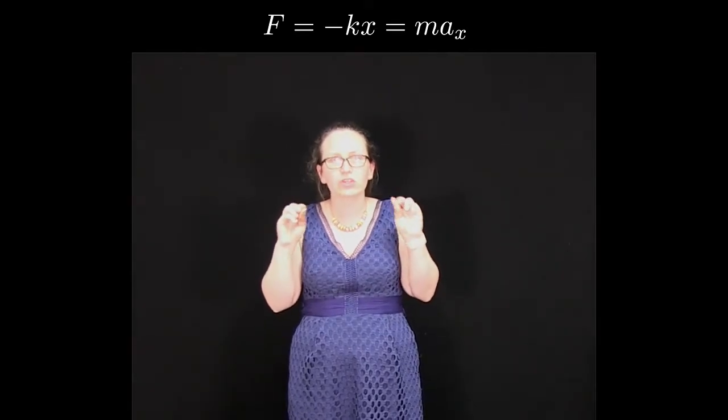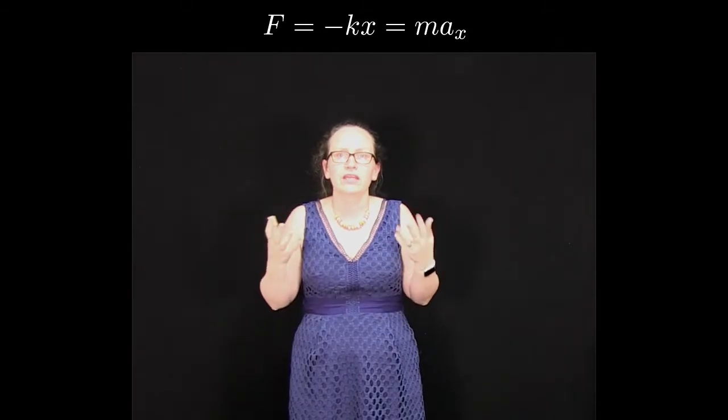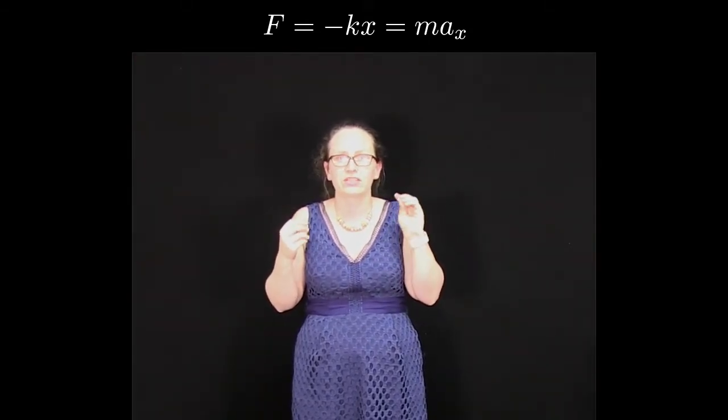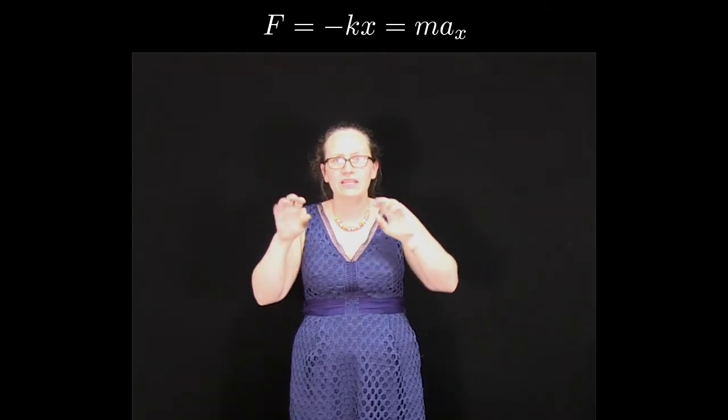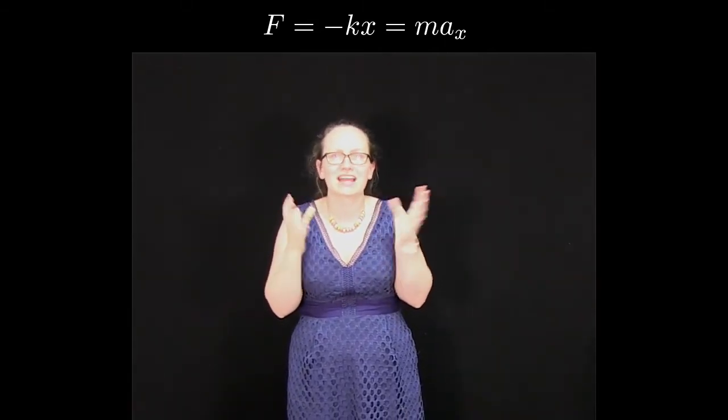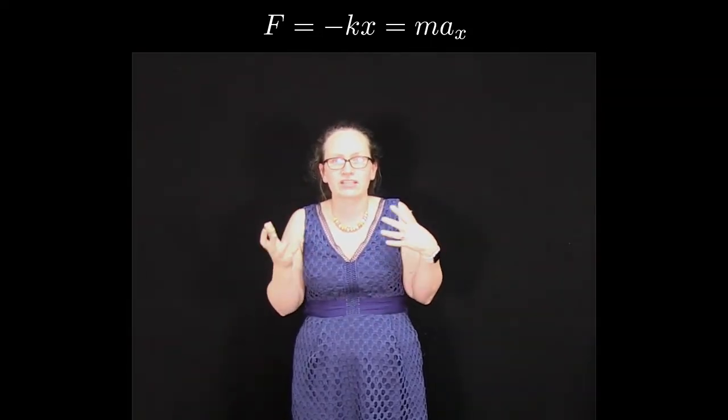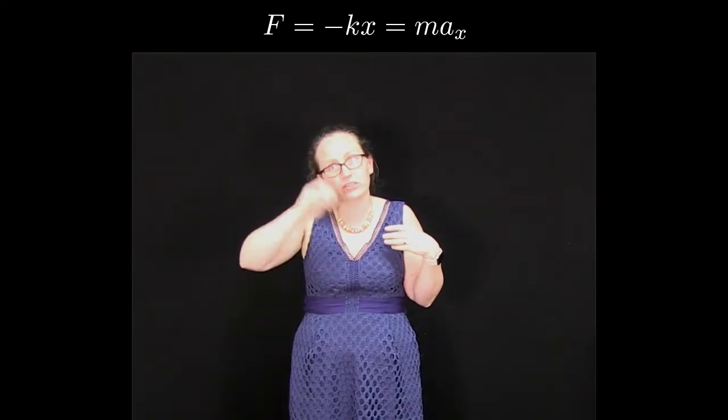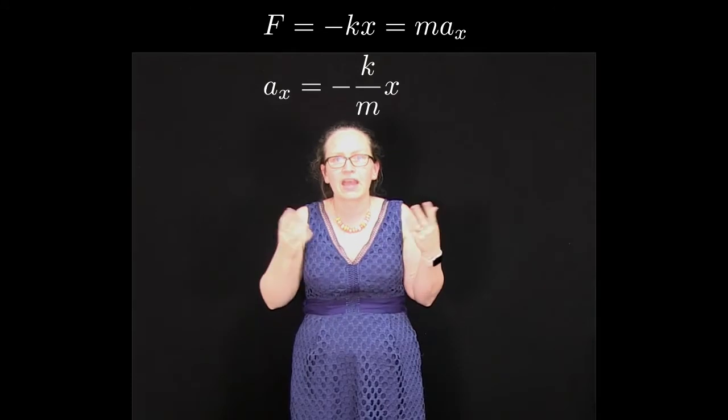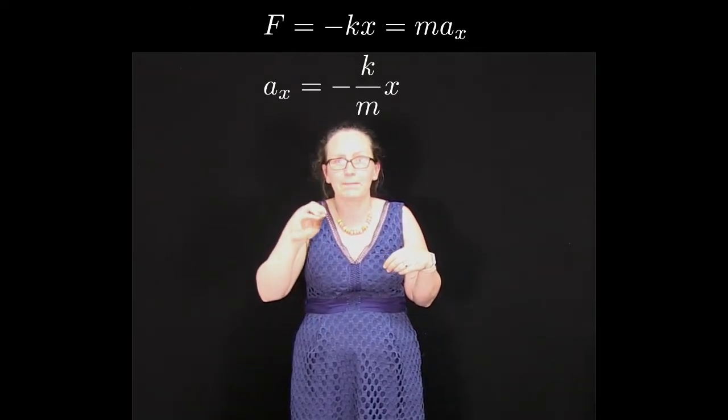So now that we've seen Hooke's law, and assuming that we know Newton's second law, we can write f equals minus kx, which equals ma_x. And we can give our a a little subscript x, which just shows that that acceleration is in the x direction. So we can rearrange this to get an expression for the acceleration of the mass on the end of that spring. And this gives us that the acceleration is equal to minus k over m times x.